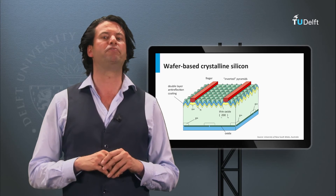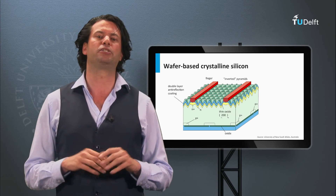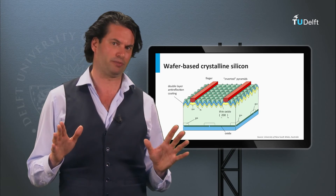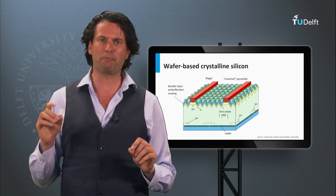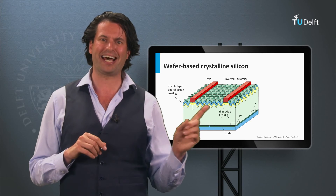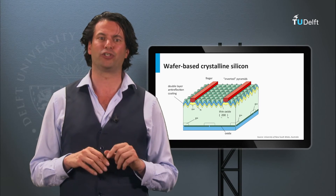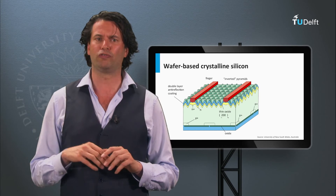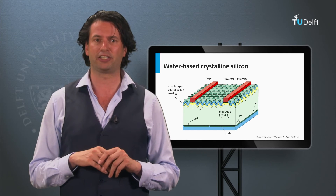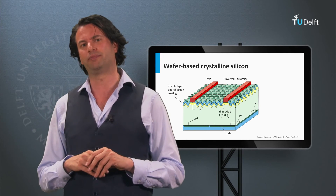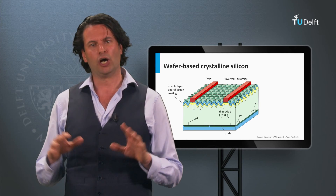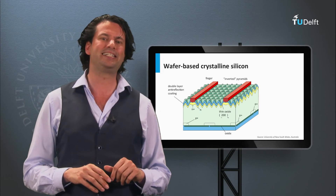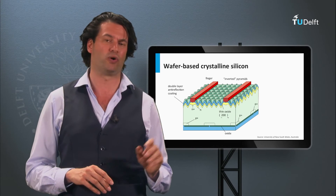The most dominant PV technology is based on crystalline silicon wafers. This technology represents around 90% of the current PV market and belongs to first generation PV technology. We will discuss this technology in great detail in week 4.